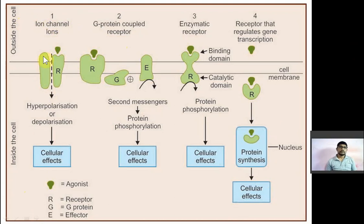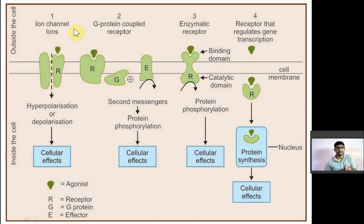In this kind of receptor, the drug or ligand will combine with the receptor and will change the permeability for various ions. Outside the cell you have different kinds of ions like sodium, potassium, chloride, etc. Increase or decrease in the permeability to those ions is the function of your ion channels, and a drug which binds to an ion channel will modify the permeability of ions.